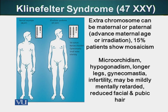Advanced maternal age or radiation can also cause this disorder. On the screen you can see the schematics of two people — one normal having a normal X and Y, the other with an extra X chromosome. You will notice that the person with Klinefelter syndrome has longer limbs and taller stature. X and Y chromosomes also have genes responsible for vertical growth, so as the number of extra X chromosomes increases, so does the height.